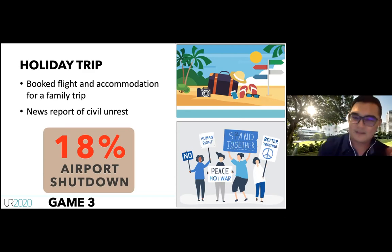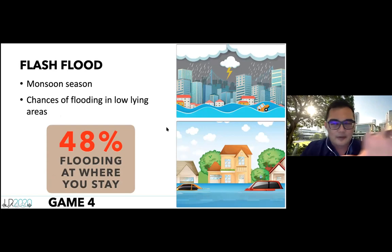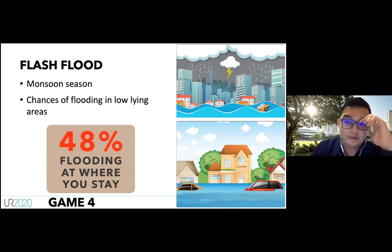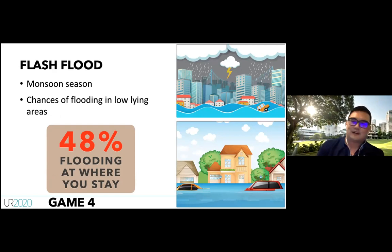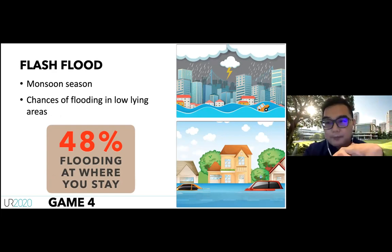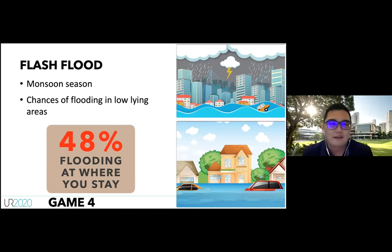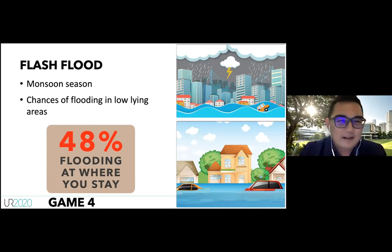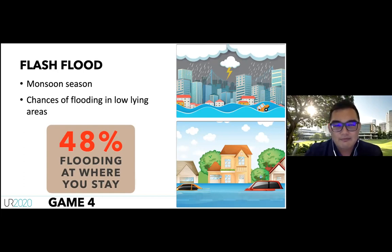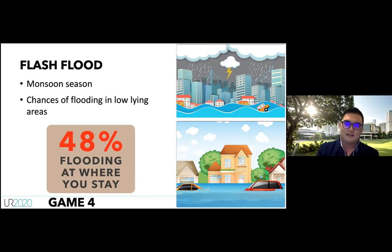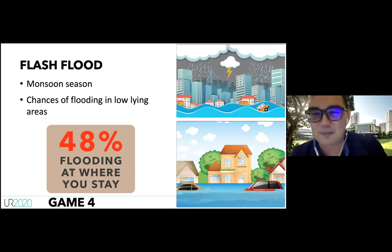Scenario two: You live in a low-lying area during monsoon season, and there's a 48% chance of flooding in your area. You live in a one-story terrace house — if it floods, it's going to be very messy. Will you grab your stuff and evacuate to somewhere higher, or stay home and hope it doesn't flood?